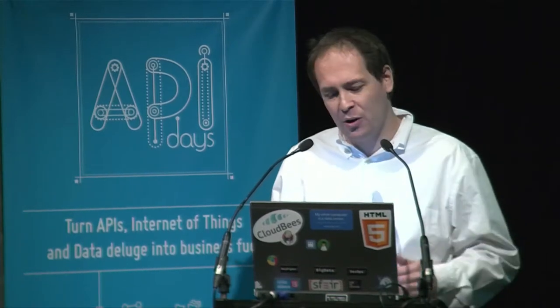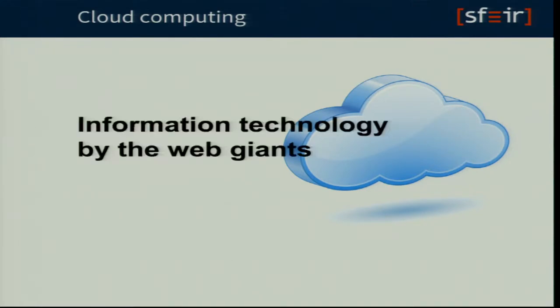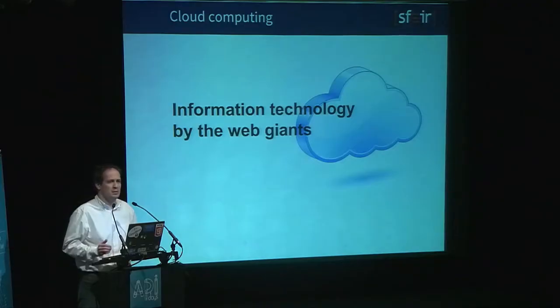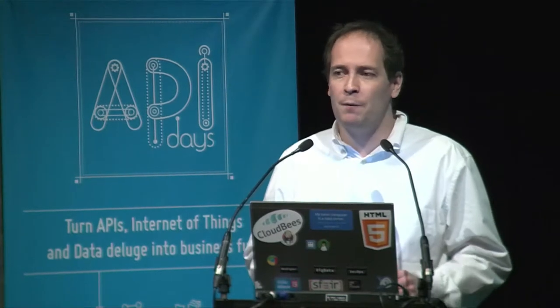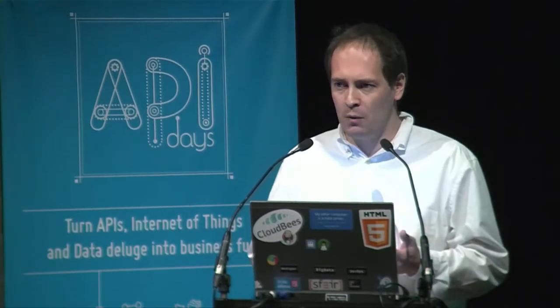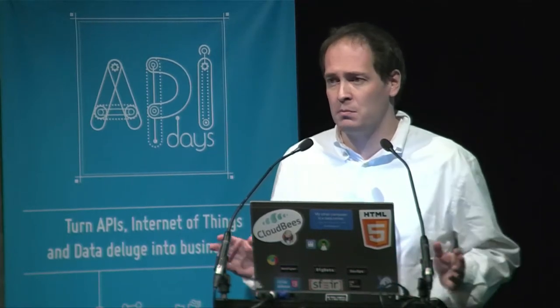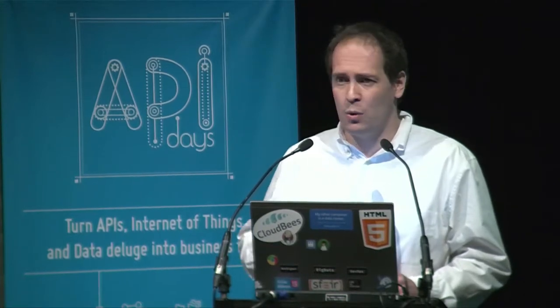The NIST definition covers five characteristics, service models, and deployment modes. But what I usually say about cloud computing is: it's information technology by the web giants — Google, Amazon, Facebook, Twitter. They faced problems they couldn't solve with traditional IT, so they had to reinvent everything from scratch. And today, what they built works so well that they can give it to us as a service. That's what I call cloud computing.